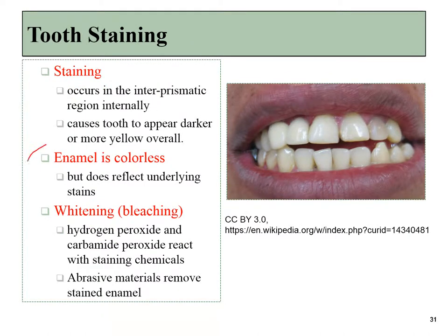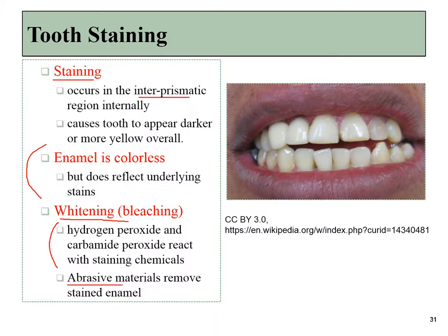Enamel has no color, but it can absorb molecules that have color — that is tooth staining. This usually occurs in the interprismatic areas, the space between the prisms, and can cause a tooth to appear darker or more yellowish. As a result, patients may seek over-the-counter products to whiten the teeth. Some of those products are safer than others — some are bleaches which, if used in the right amount for the right amount of time, can whiten teeth safely. Others are abrasive and just wear away the stained portions, unmasking fresher underlying portions of enamel, which generally is not healthy because it involves loss of enamel.